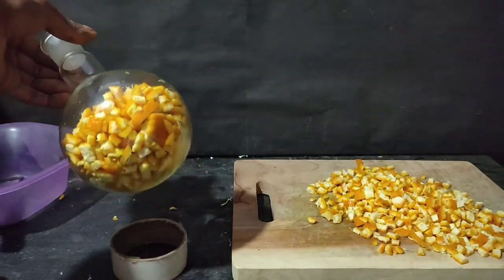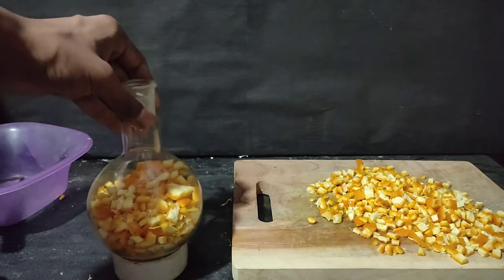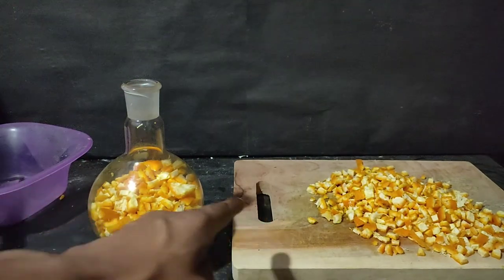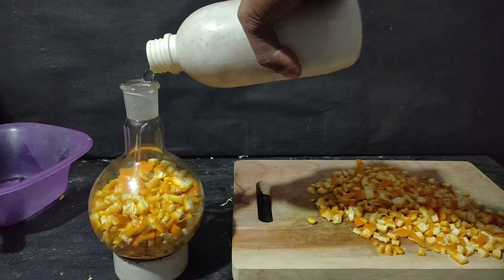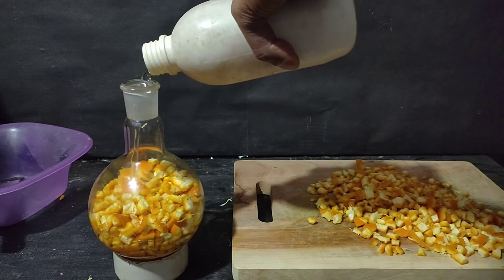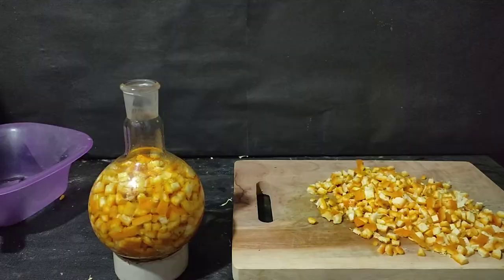Only half of the peels came inside my round bottom flask, so I kept these peels aside and added some water inside the flask. Then I set the apparatus for steam distillation.